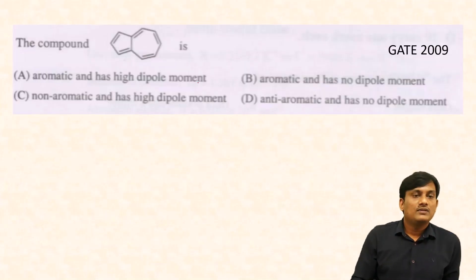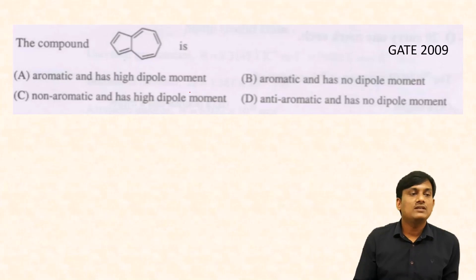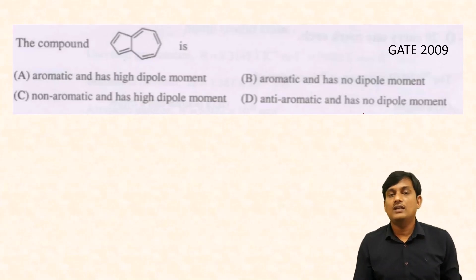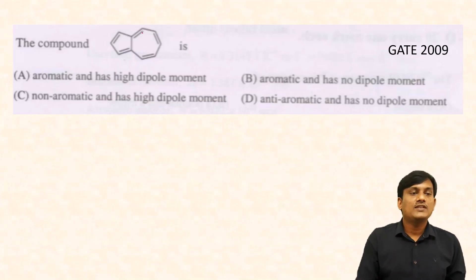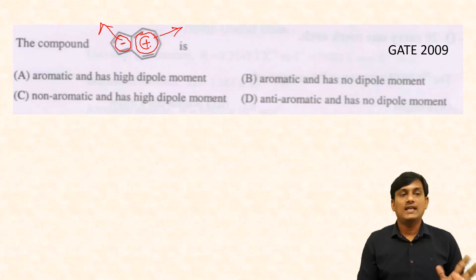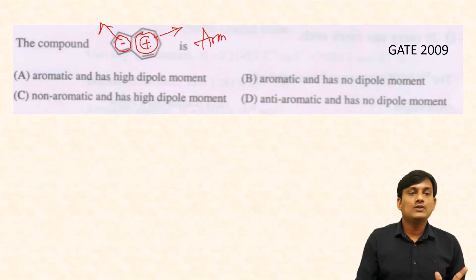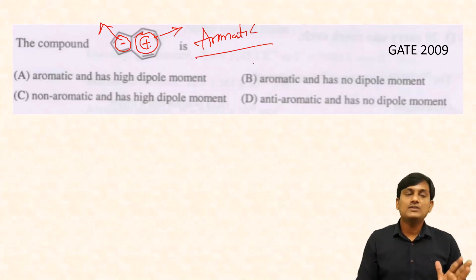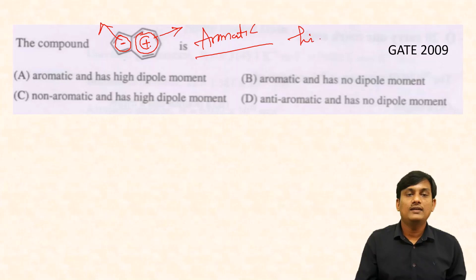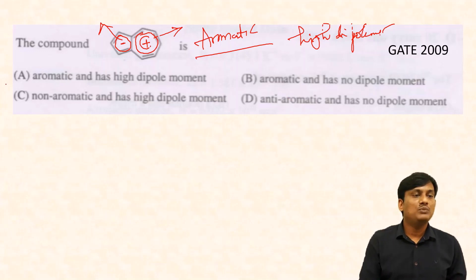Let's take a question related to azulene. The compound azulene is: (a) aromatic and has high dipole moment, (b) aromatic and has no dipole moment, (c) non-aromatic and has high dipole moment, (d) anti-aromatic and has no dipole moment. If you take the resonance hybrid, this one has a positive charge and this one has a negative charge — this is the tropylium cation, and this is the cyclopentadienyl anion, and both rings are aromatic. So azulene is aromatic. There is a separation of positive and negative charge, so when there is charge separation, you have high dipole moment. The correct option is: aromatic and has high dipole moment.